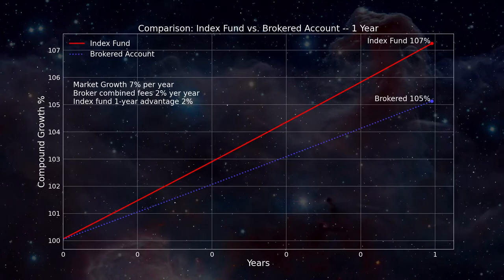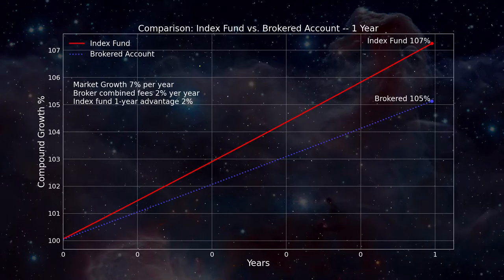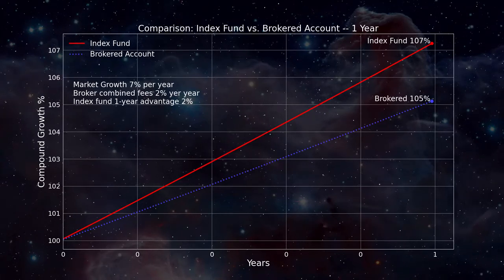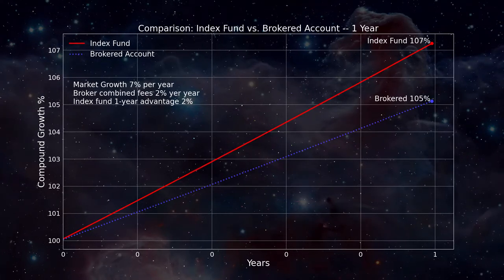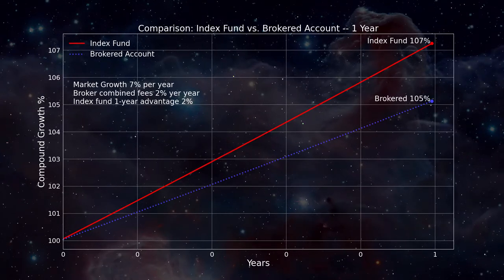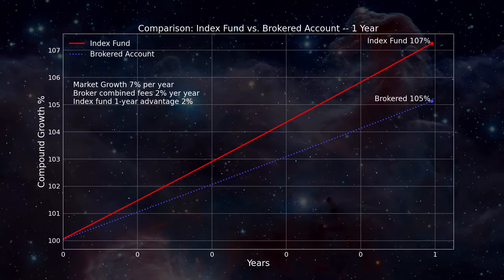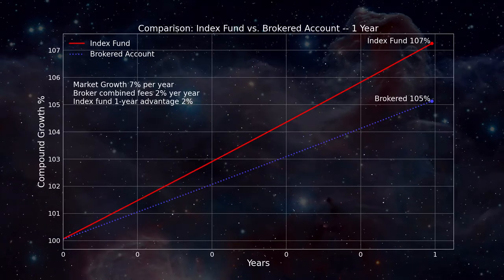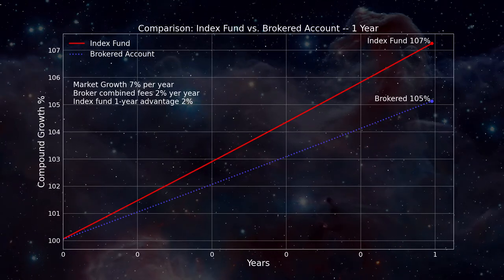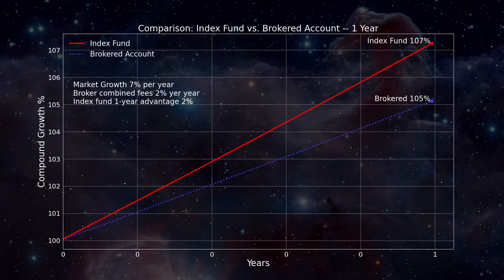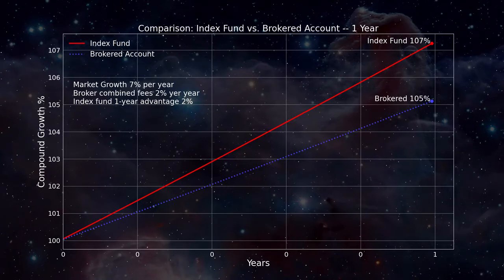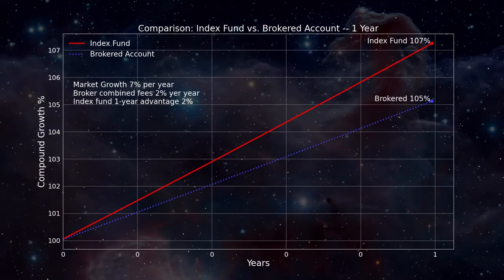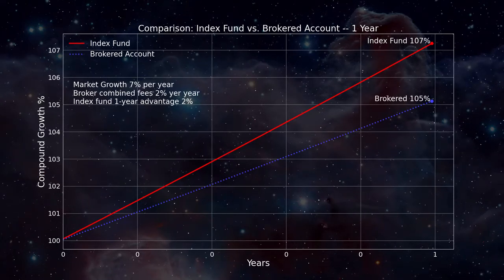In these examples, we compare a no-fee index fund that yields 7% per year against a managed account that yields 5% because of brokerage costs and accompanying losses. In the one-year chart, the index fund comes out ahead by 2%. Not surprising.